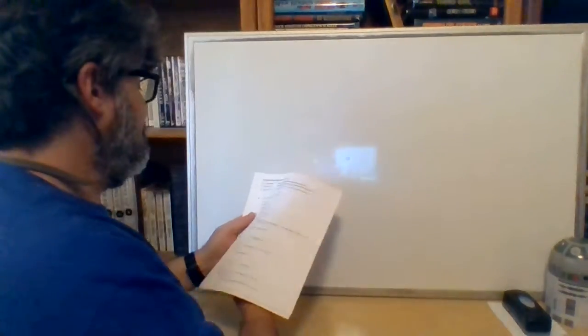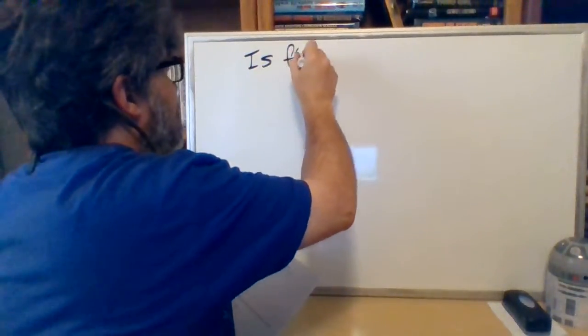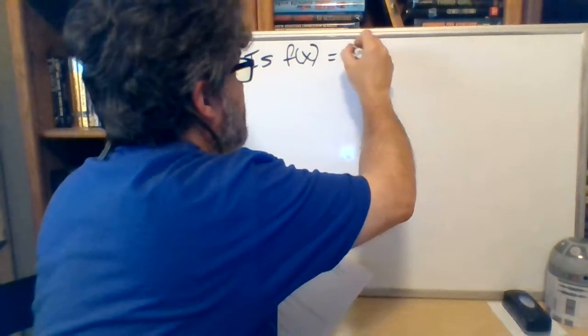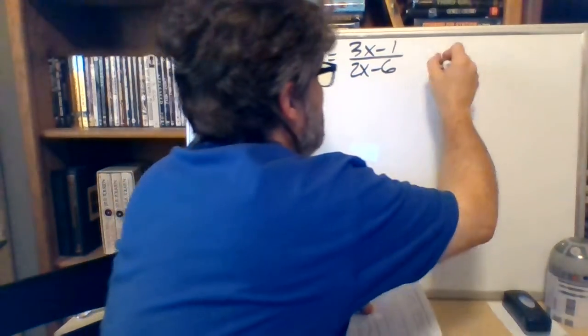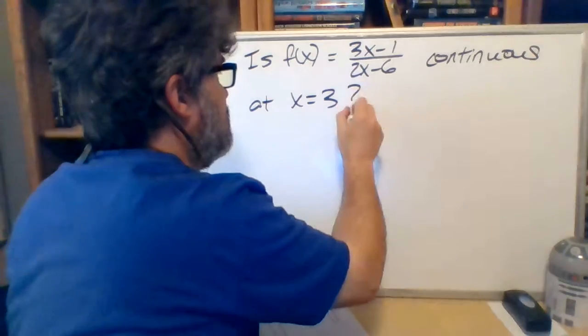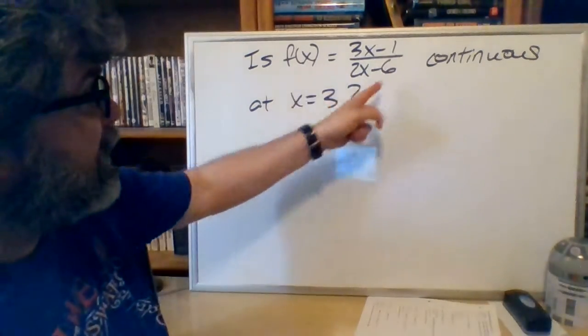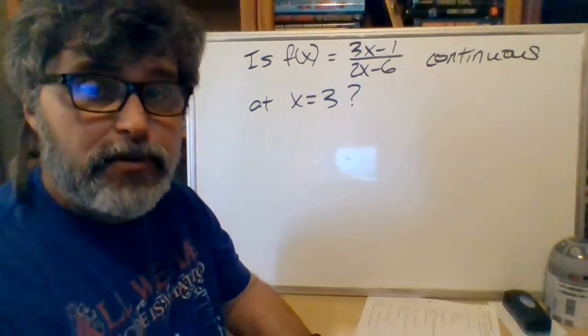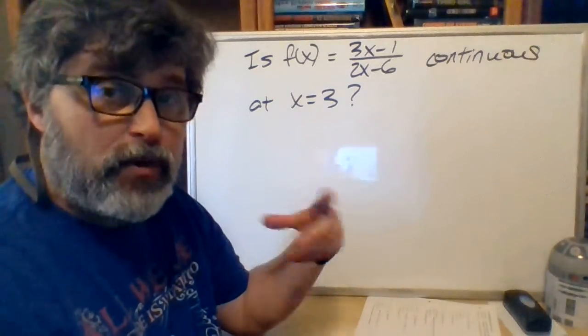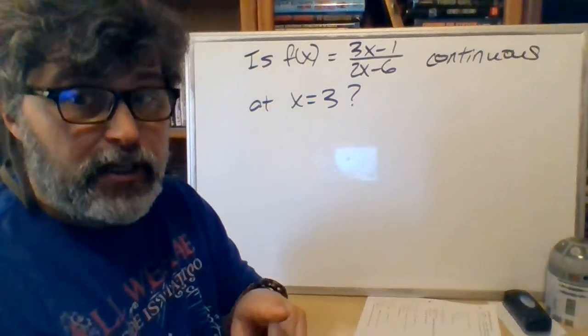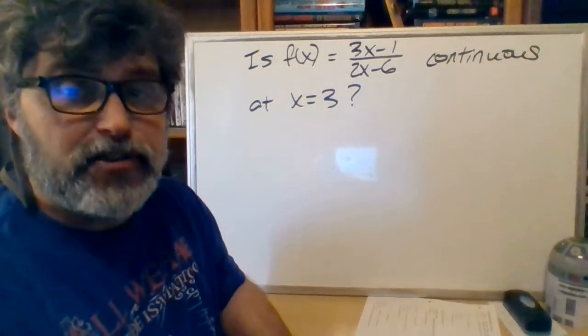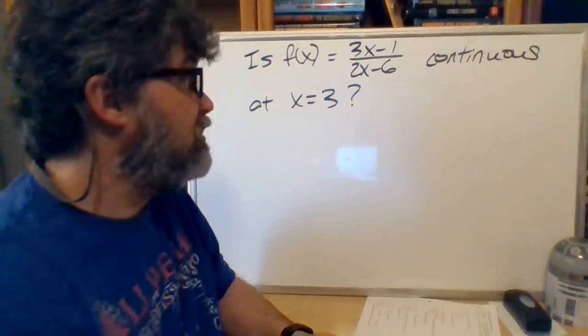It's an entirely different matter when you need to do this in algebra. Here's a problem: Is f(x) = (3x minus 1) over (2x minus 6) continuous at x equals 3? When you get asked these things in algebraic form and you don't have a graph, you need to do what is called the three-step test for continuity. You're going to need to do all three steps, even if the function fails the first or second step.